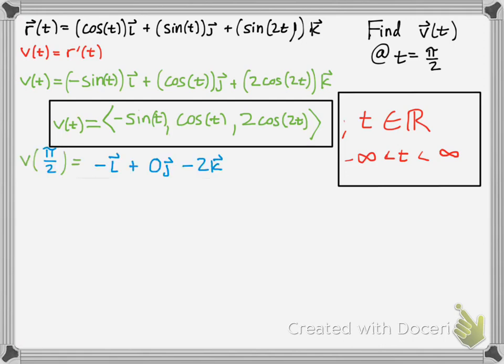Finally, plug in time t equals pi over 2. Sine of pi over 2 is 1, and we have a negative there, so negative 1. Cosine of pi over 2 is 0. 2 cosine 2 times pi over 2, that's cosine pi. Cosine of pi is negative 1, times 2 is negative 2. It could also be written like this as well.